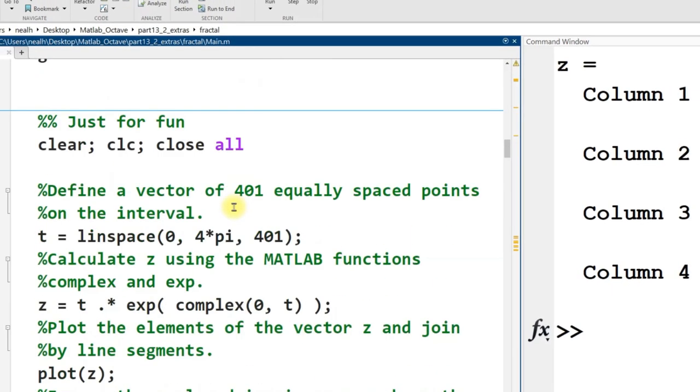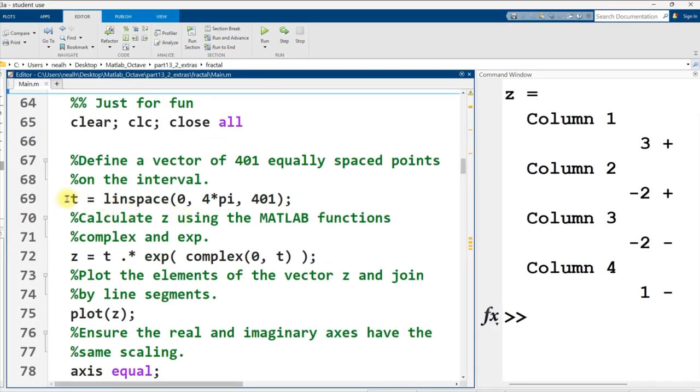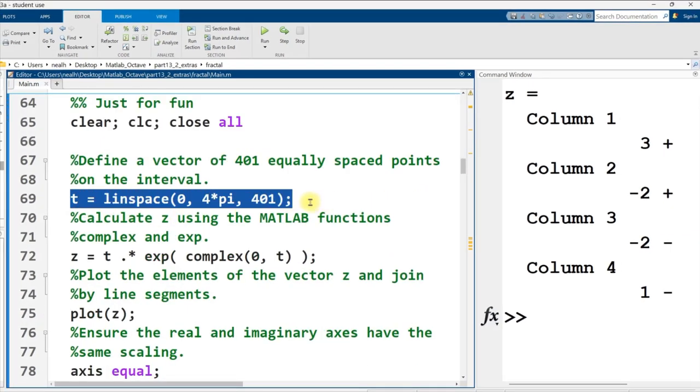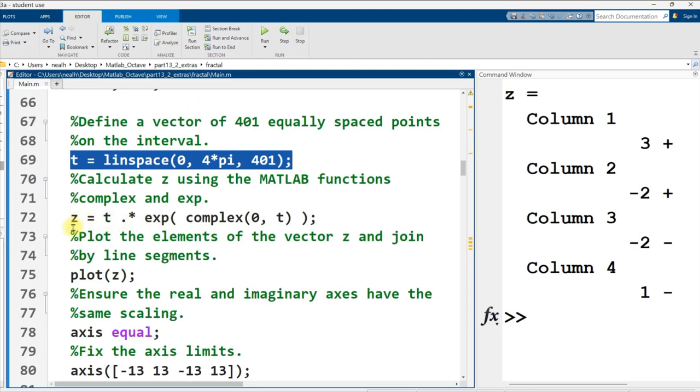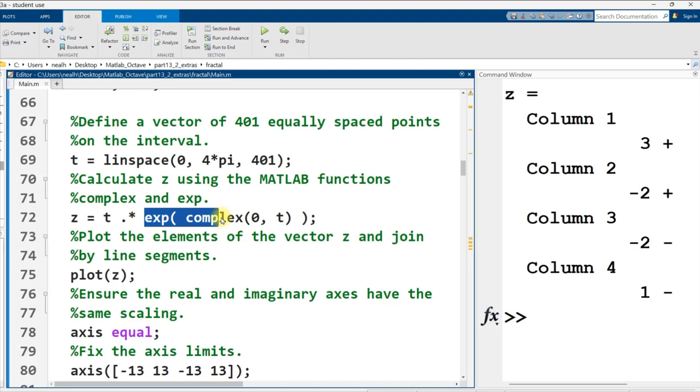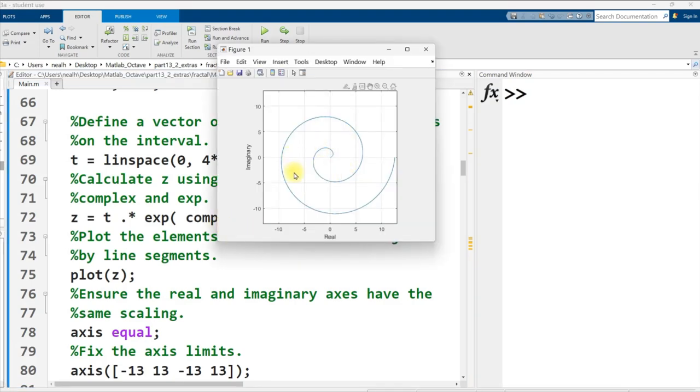And then just for fun, I have this next section right here, where I generate real numbers between 0 and 4 pi, and then I generate a vector of complex numbers using my t vector, multiplied by e raised to the t times i. I run this section, and I get a spiral, and I think that's kind of cool.